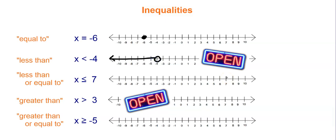The next symbol is less than or equal to — x is less than or equal to 7. It's all the numbers to the left of 7, but it also includes 7, so we put a closed circle there. The next one is greater than — all the numbers greater than 3, shaded to the right, but it doesn't include 3, so we put an open circle on 3.